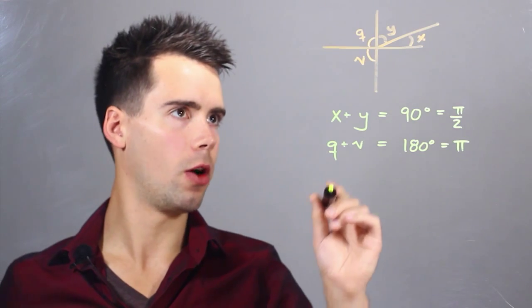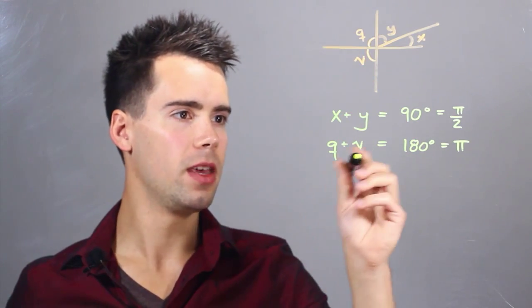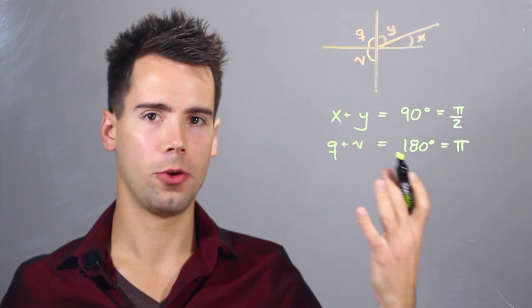If we had something different though, where q is actually 130 degrees, we would find that v is simply equal to 180 minus 130, or 50 degrees.